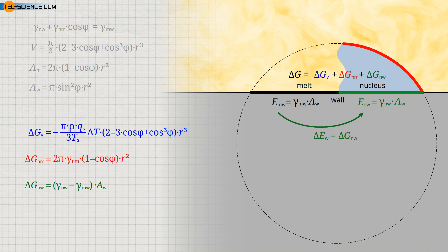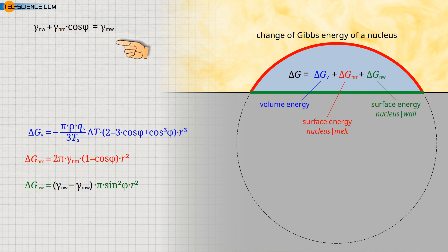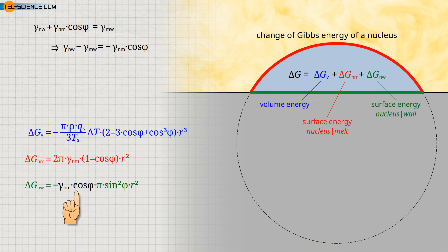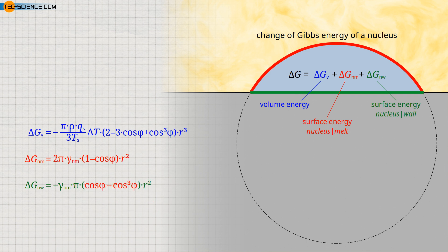Since the melt-wall interface already has a surface energy before nucleation, it only has to be changed during nucleation — not provided anew. The wall, so to speak, already provides part of the surface energy for nucleation. Substituting the expression for the contact area into the surface energy change equation gives the formula for the third term. Applying Young's equation allows the difference in surface tensions to be expressed in terms of the nucleus-melt surface tension and the contact angle. A geometry term can also be replaced using a standard formula collection identity, simplifying the equation.